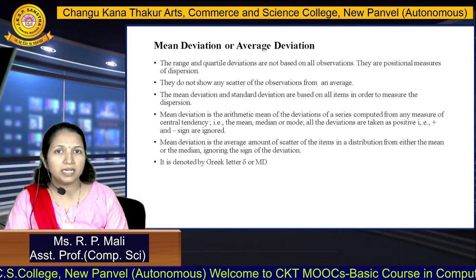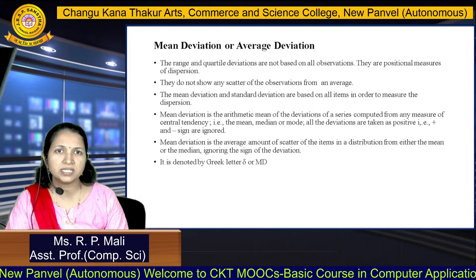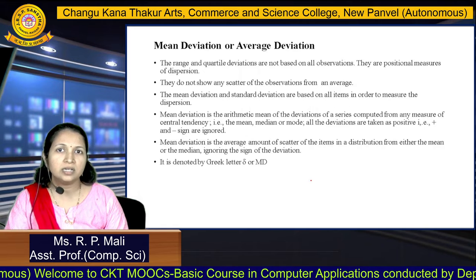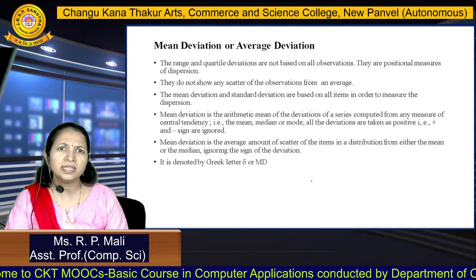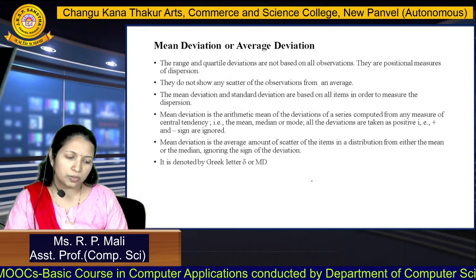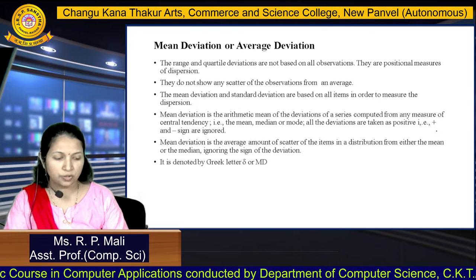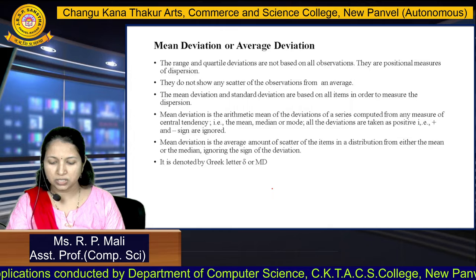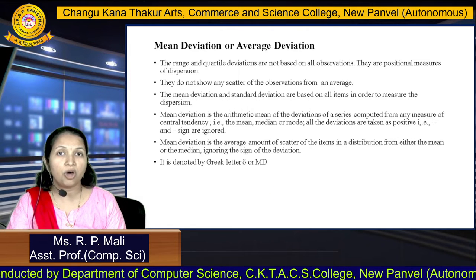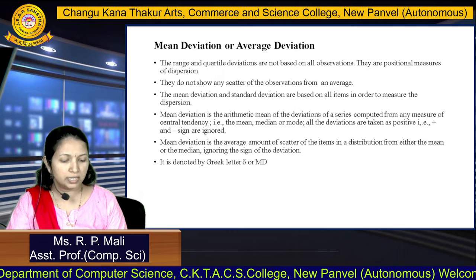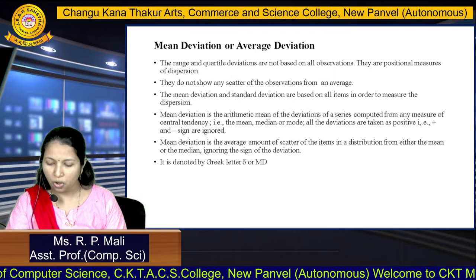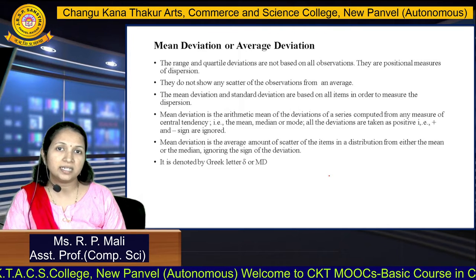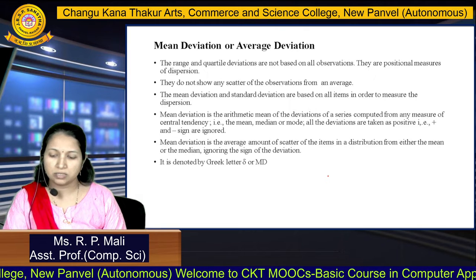Mean deviation is the arithmetic mean of the deviations of a series computed from a measure of central tendency — that is, the mean, median, or mode. All deviations are taken as positive, ignoring negative signs. So mean deviation is the average amount of scatter of the items in the distribution from either the mean or the median, ignoring the sign of the deviation. It is denoted by the symbol delta or MD, which stands for mean deviation.